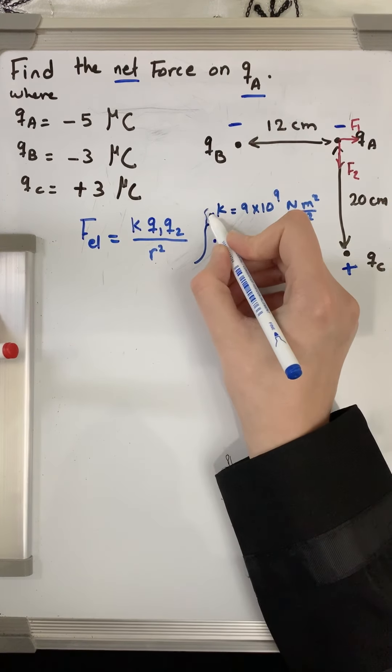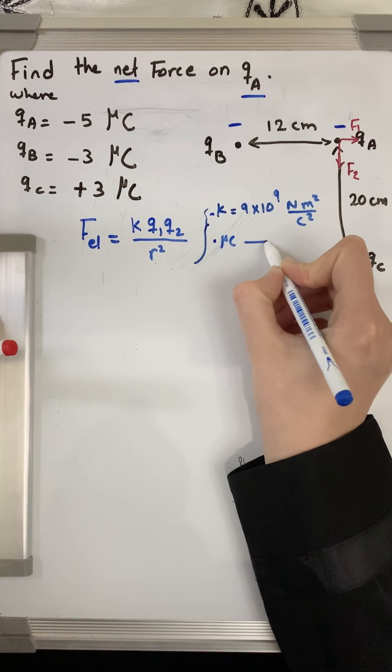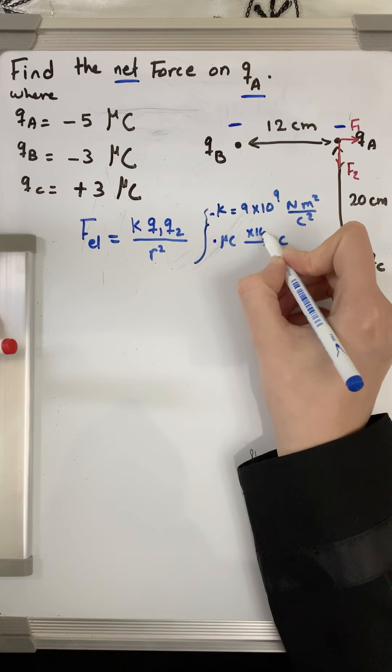microcoulomb is not the SI unit. To convert from microcoulomb to coulomb at any time, you need to multiply by 10 to the power negative 6.